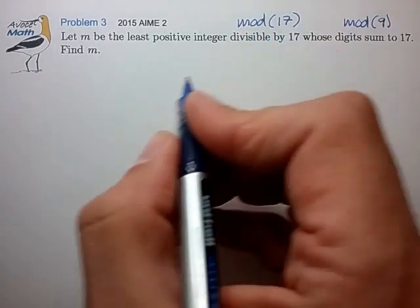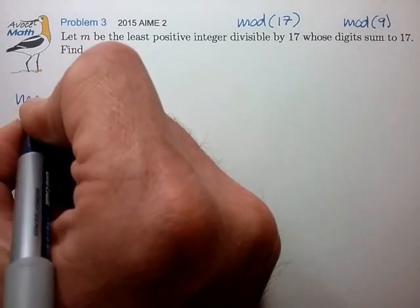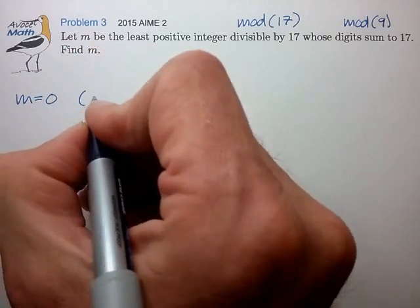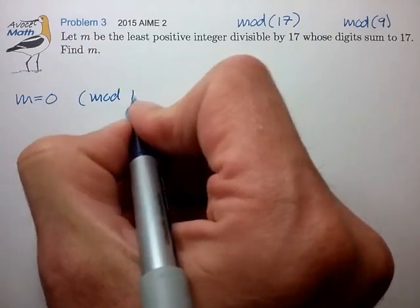So in mod 17, the condition is pretty simple. We have that m is equal to 0 in mod 17.